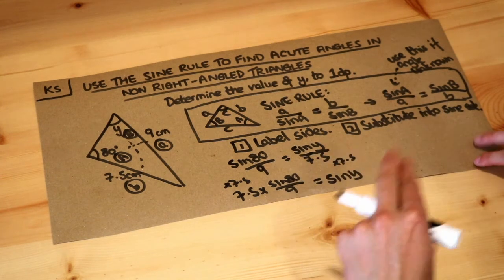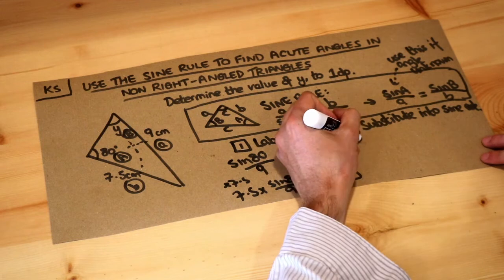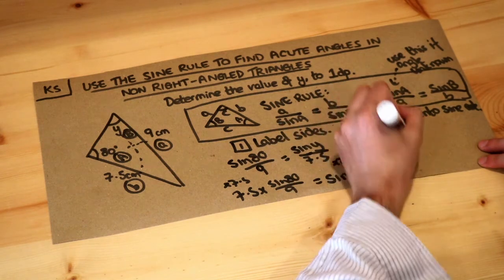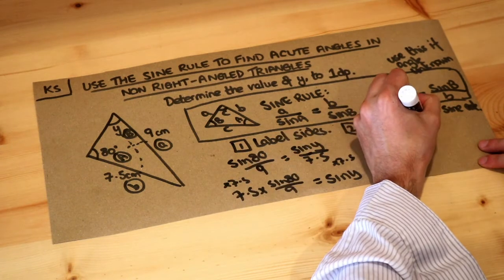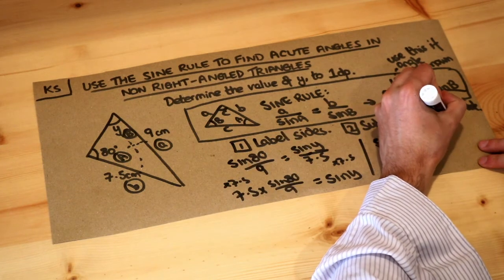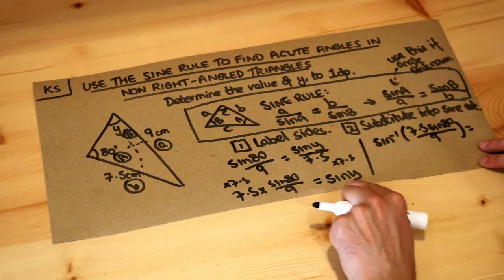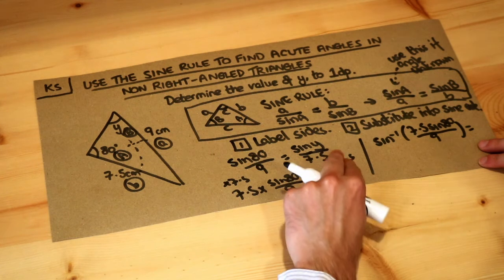Now we want to get y on its own. To solve for y, it's being signed, we want to get rid of that sine, so we do inverse sine of both sides. And if I do that, I'm going to do inverse sine, sine to the minus 1 as we write it, of this thing, so 7.5 sine 80 over 9, and then inverse signing the right hand side will just get rid of the sine because inverse sine cancels that sine, leaving just y.